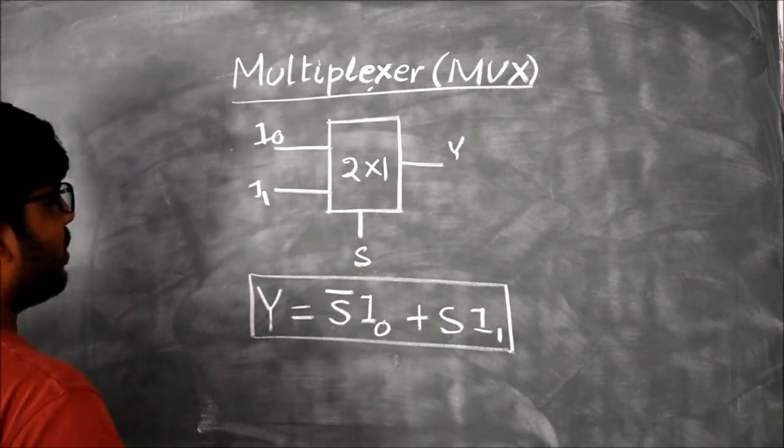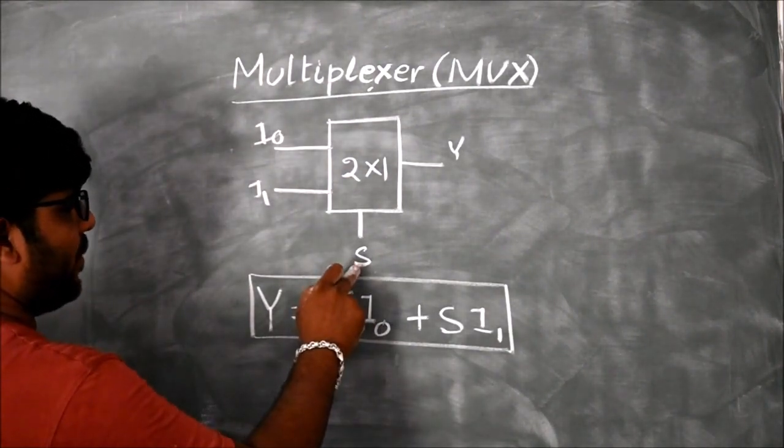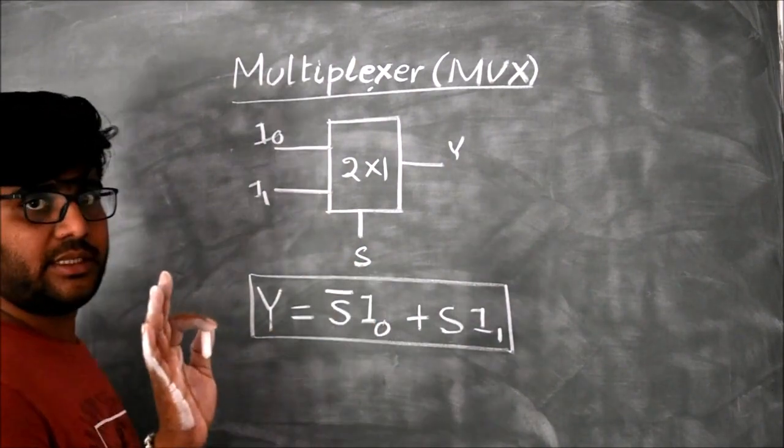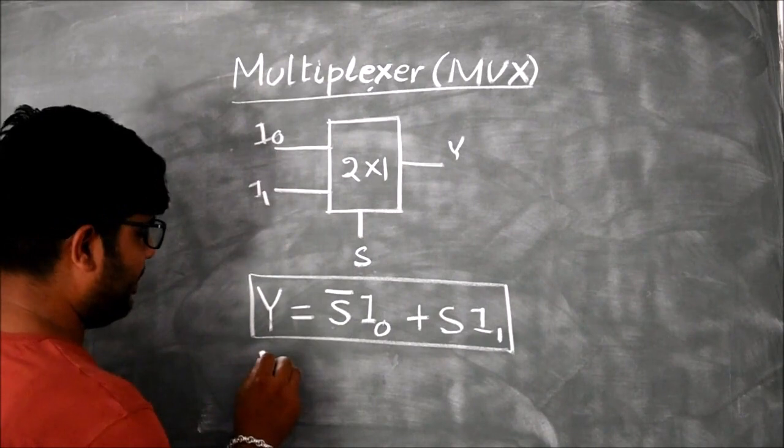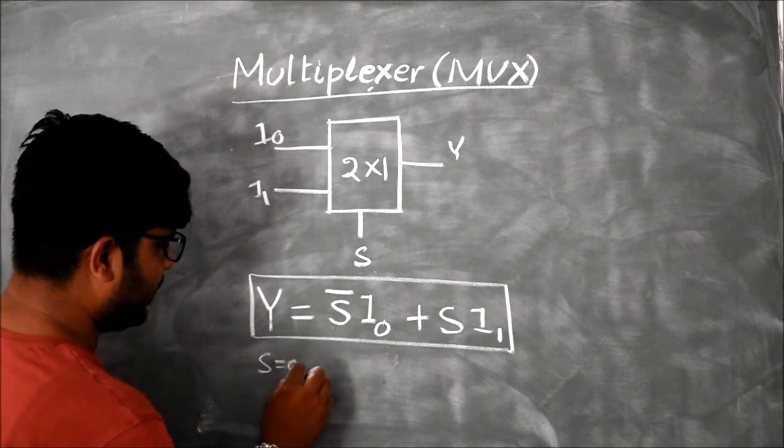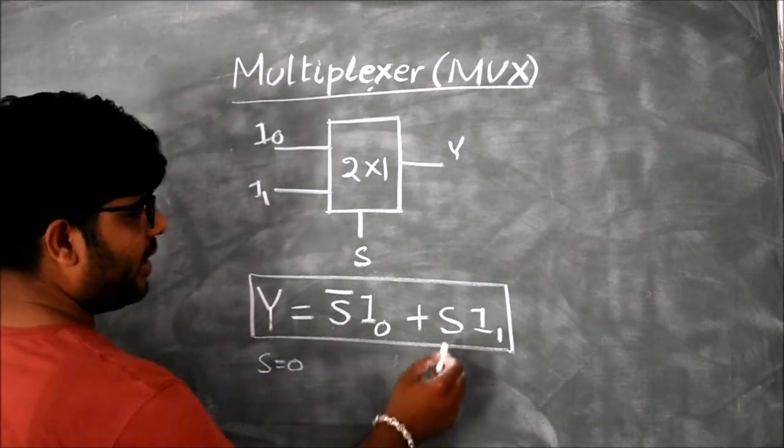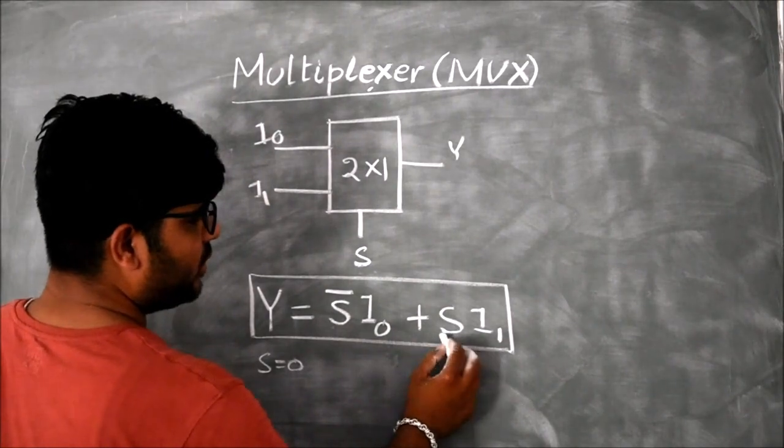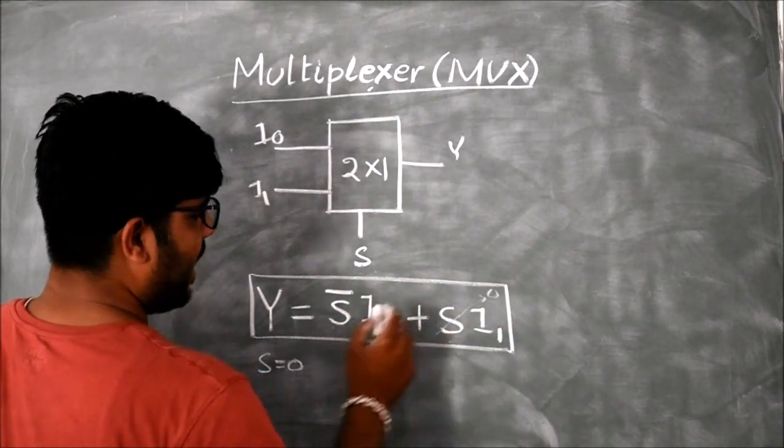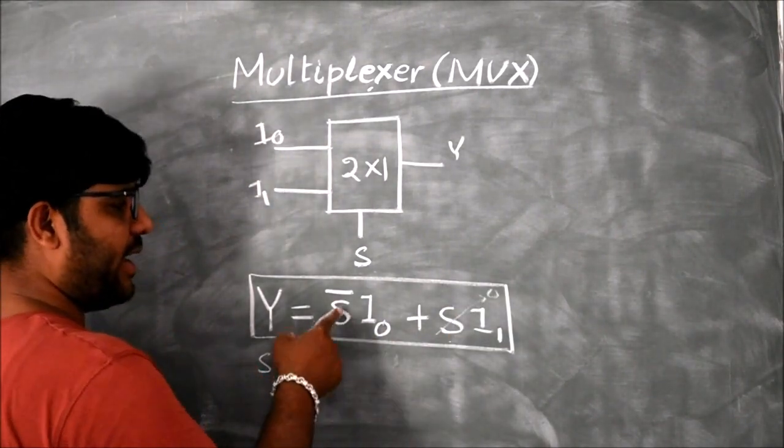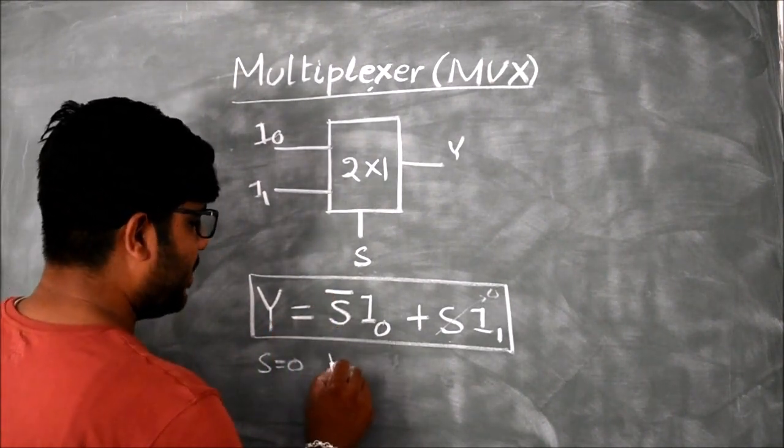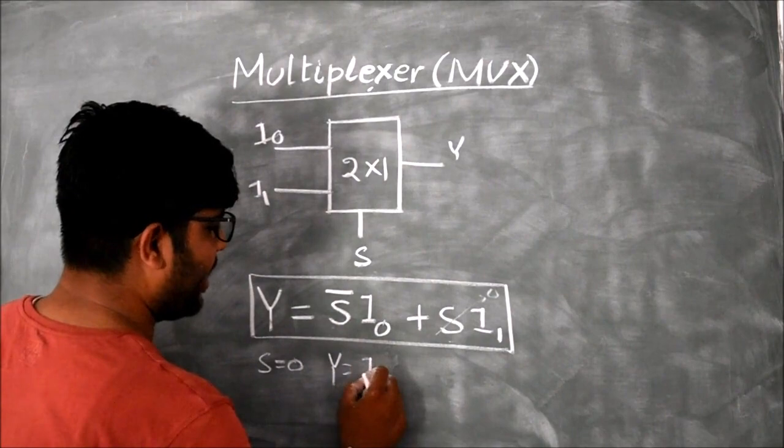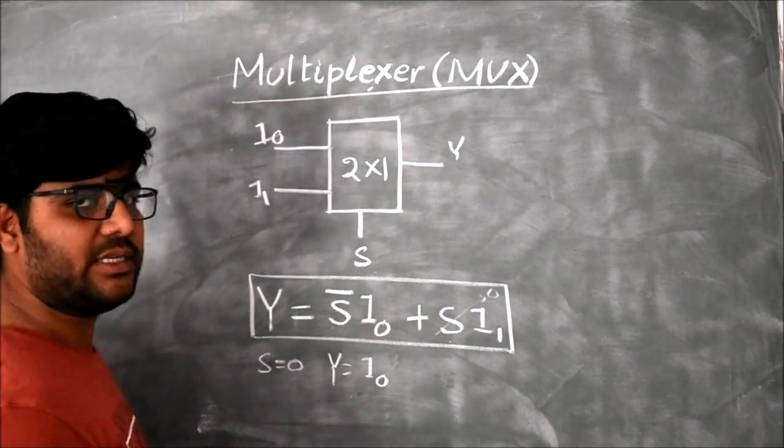Here you can see, what will happen when I put S equal to 0? When S is equal to 0, this S is 0, so this term vanishes. And S complement is 1, 1 into I0, so Y is equal to I0. 1 into I0 is equal to I0.